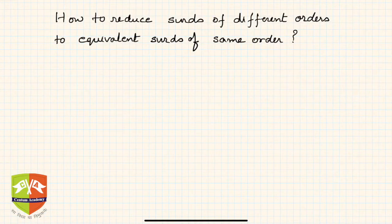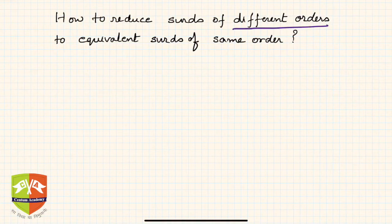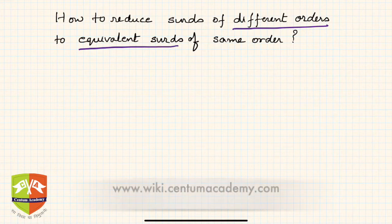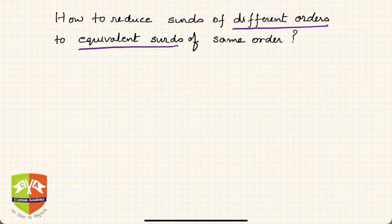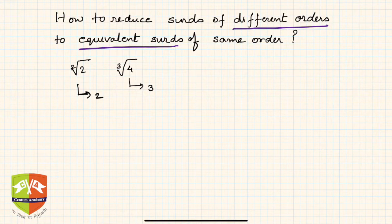Now let us understand how to reduce radicals of different orders to equivalent radicals of the same order. Let's say we have square root of 2 and cube root of 4. Clearly, the order here is 2 and the order of this radical is 3, so they are neither similar nor of the same order. So how do we reduce them to the same order?